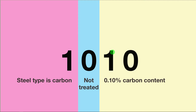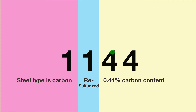Let's look at another example. This is also a carbon steel. It has a one for the second digit, which means it's resulphurized, and it has a 0.44% carbon content.